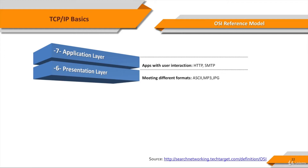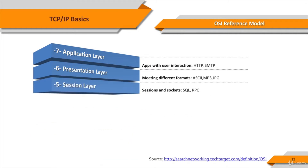Layer 6, the presentation layer. This layer is usually part of an operating system and converts incoming and outgoing data from one presentation format to another — for example, from clear text to encrypted text at one end and back to clear text at the other. Layer 5, the session layer. This layer sets up, coordinates, and terminates conversations. Services include authentication and reconnection after an interruption. On the Internet, TCP and UDP provide these services for most applications.